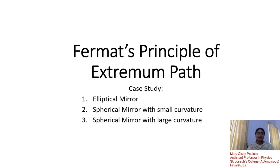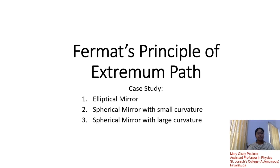Good day, students. Today we shall discuss Fermat's principle of extremum path in different cases. First, let us recall the principle. According to Fermat's principle of extremum path, when light travels from one point to another through a set of media, of all the possible paths, light will choose that path for which time taken is extremum. That is, time taken can be a maximum, a minimum, or a stationary value.